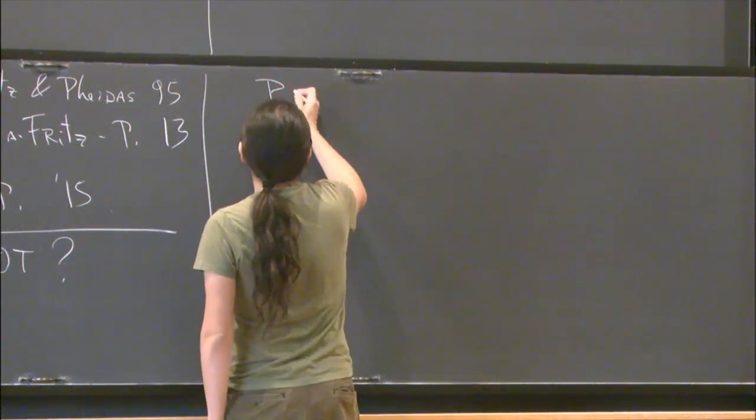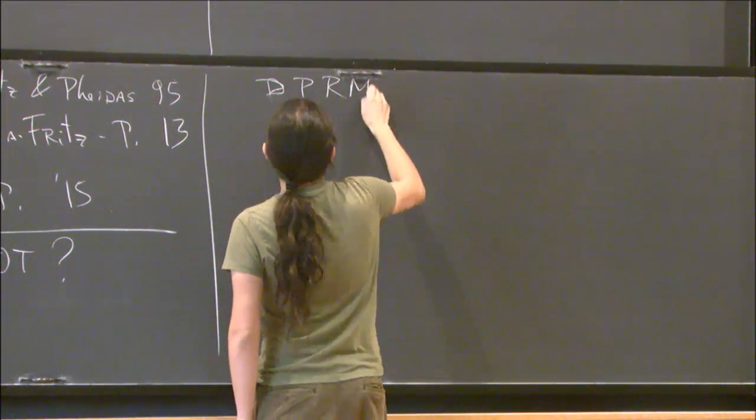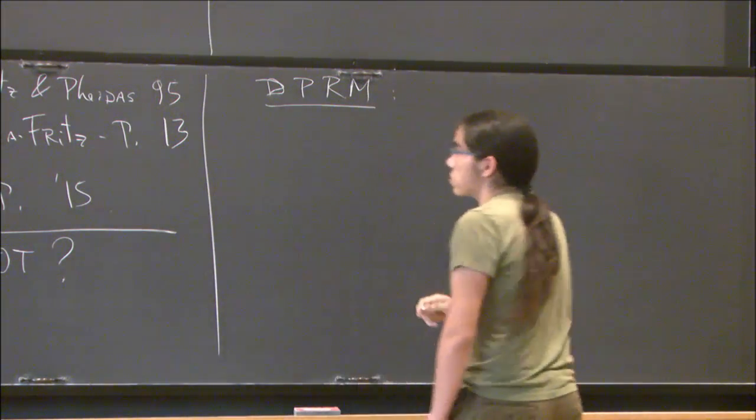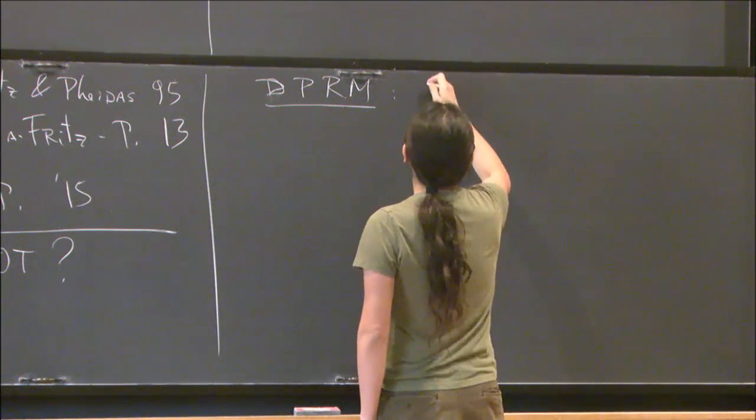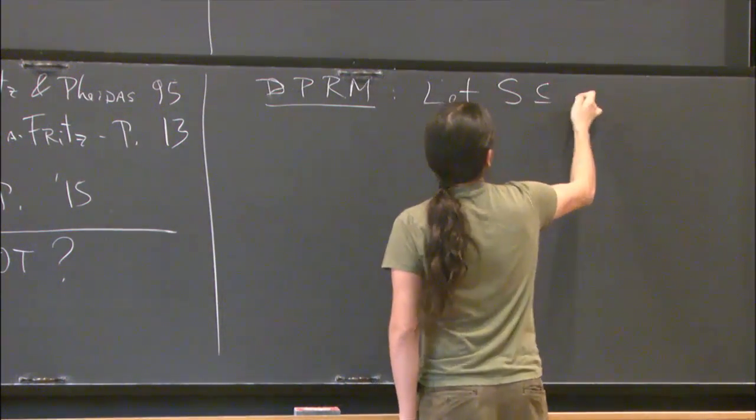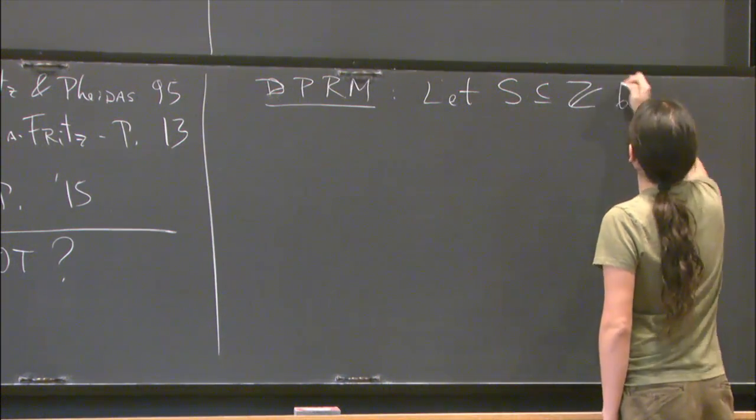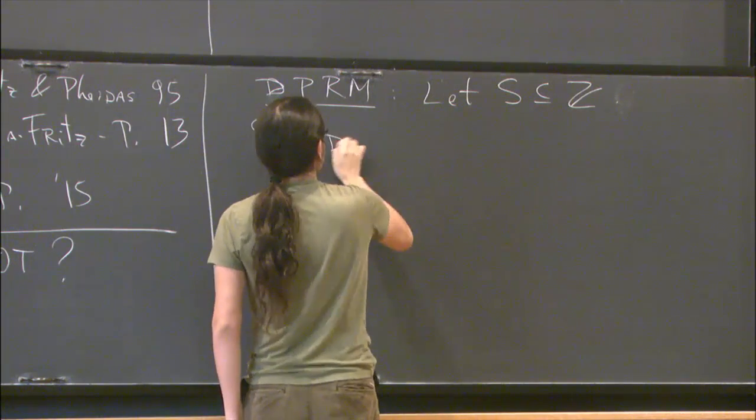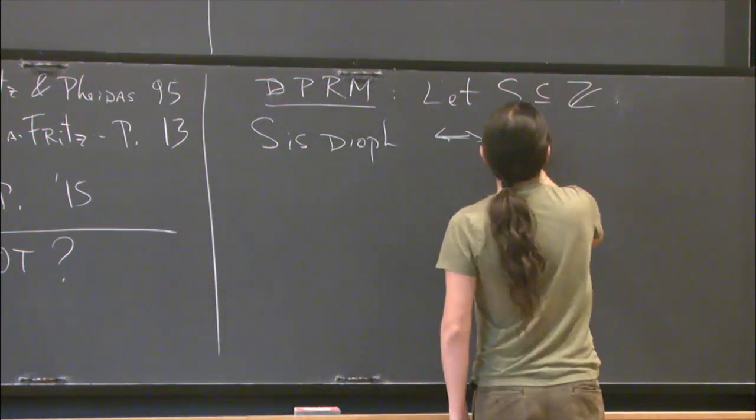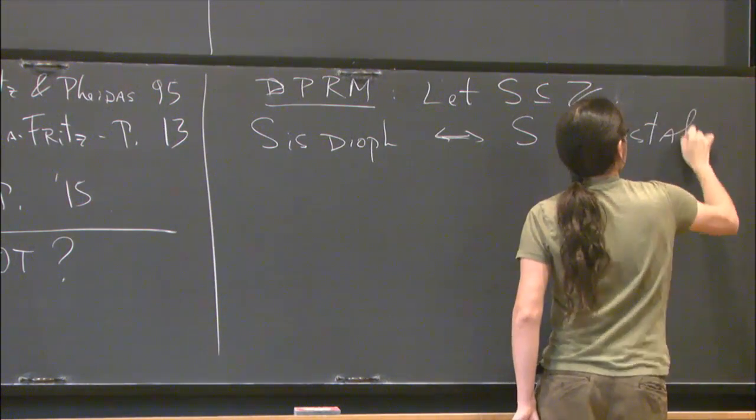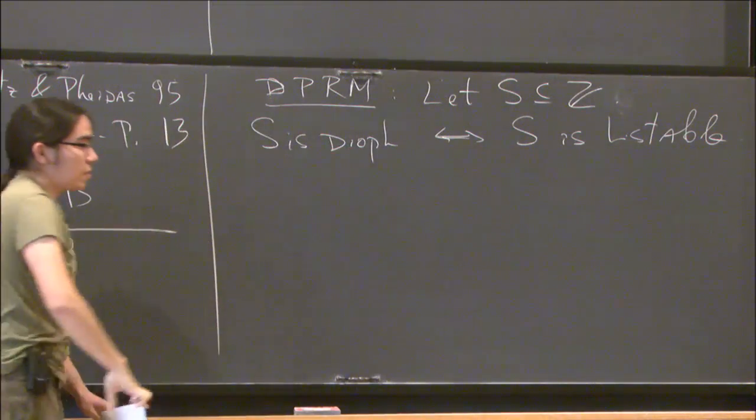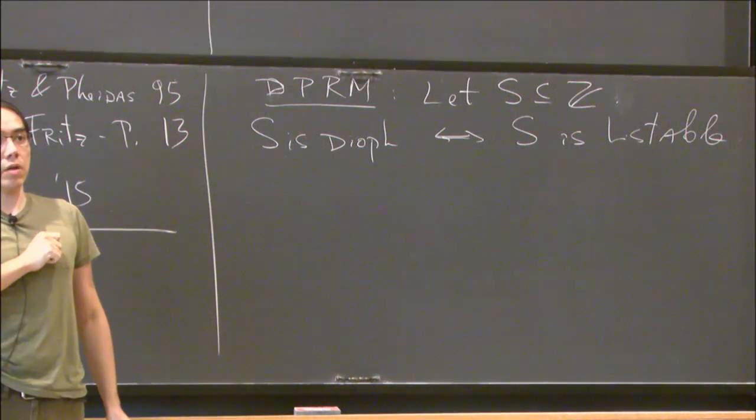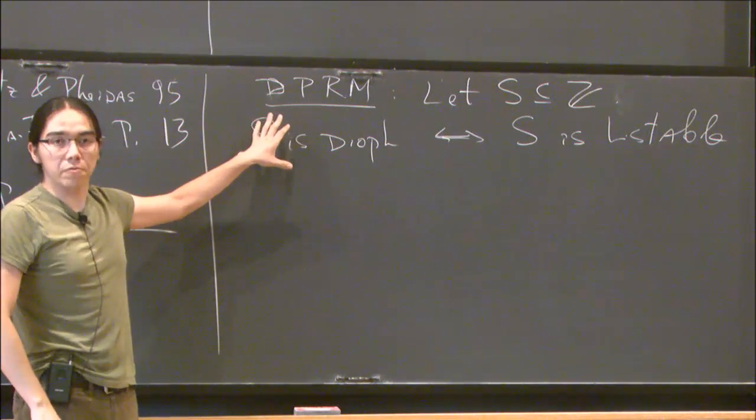So let me revisit the DPRM theorem. Because actually, I was hiding some information. What was proved was much stronger than that. They proved a structure theorem. They proved a classification of the Diophantine sets. So let S in the integers be just that. Then S is Diophantine if and only if S is listable.